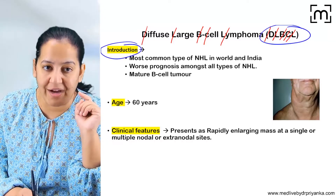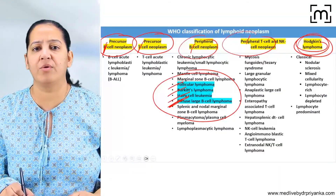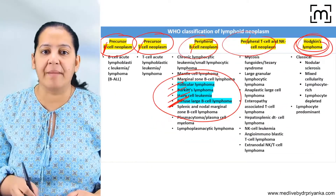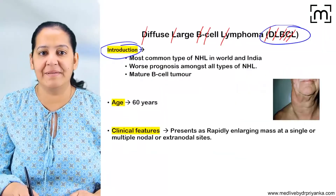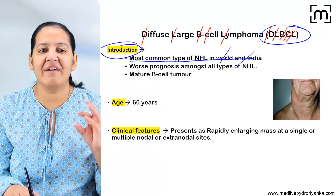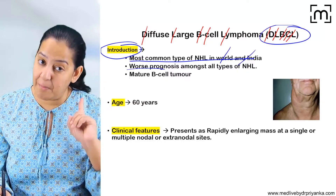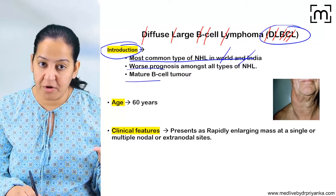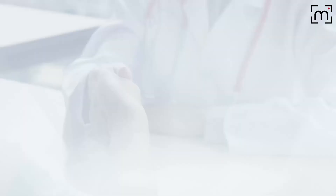DLBCL stands for Diffuse Large B Cell Lymphoma. For the introduction: among all types of Non-Hodgkin's Lymphoma, the most common is DLBCL — the most common type of NHL both in the world and in India. It also has the worst prognosis among all NHL. It is a tumour of mature B cells and typically presents in old age, around 60 years.